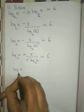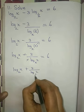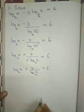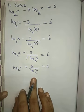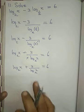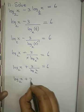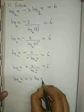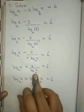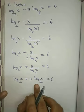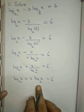So I will have log x to the base 2 plus 3, divided by log 2 to the base x, equal to 6. Applying the change of base rule again, 1 divided by log 2 to the base x becomes log x to the base 2, its reciprocal.